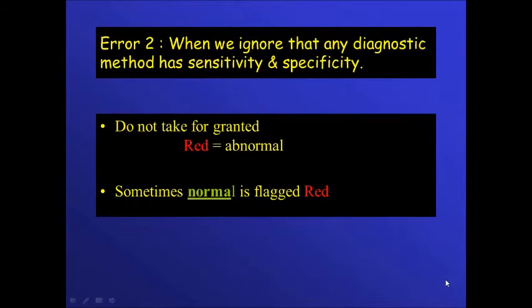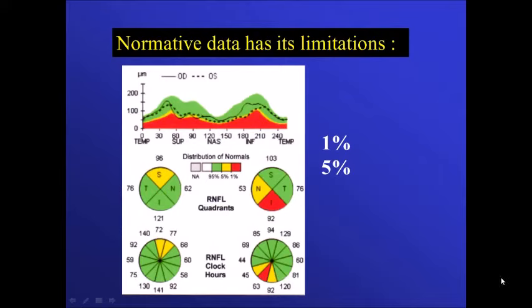The second type of error arises when we assume that sensitivity and specificity are perfect. Not every red area is abnormal — sometimes a normal area is flagged as red. Keep in mind: even when we call an area abnormal based on the red threshold, it may still be normal in 1% of the population. For yellow, the flagged area can be normal in 5% of the normal population.